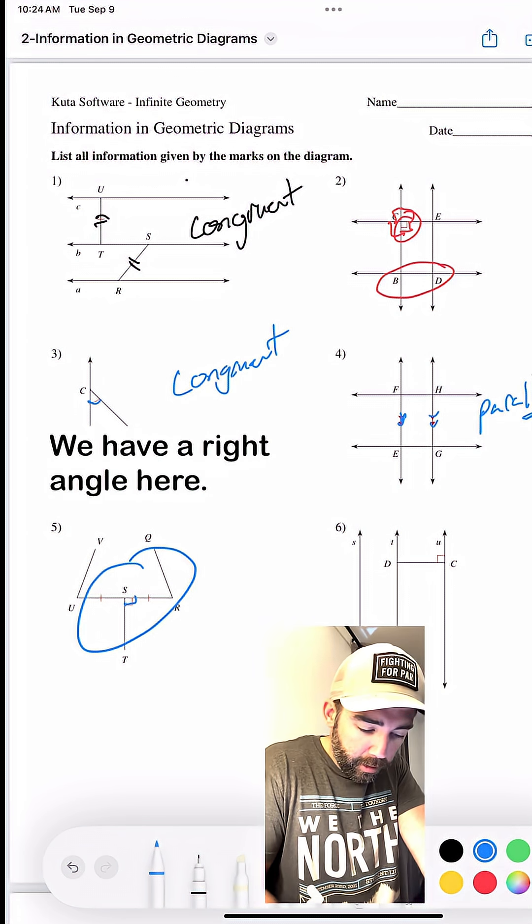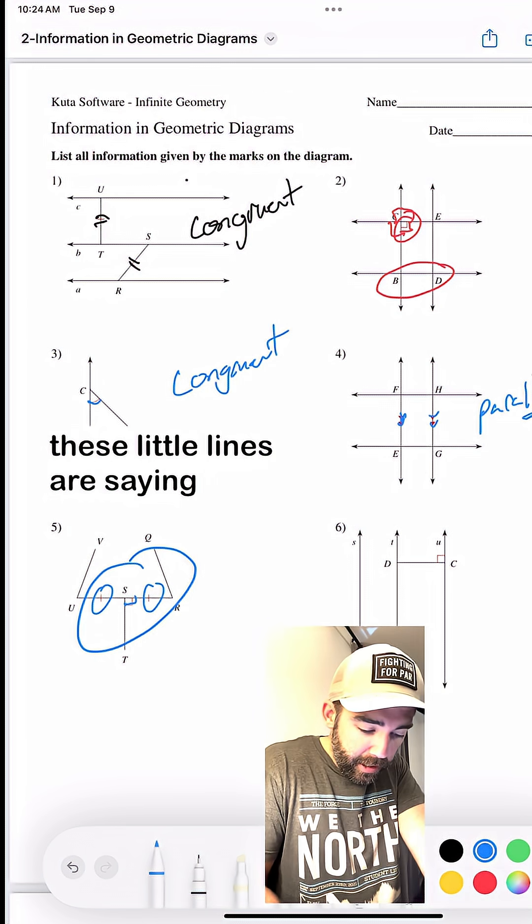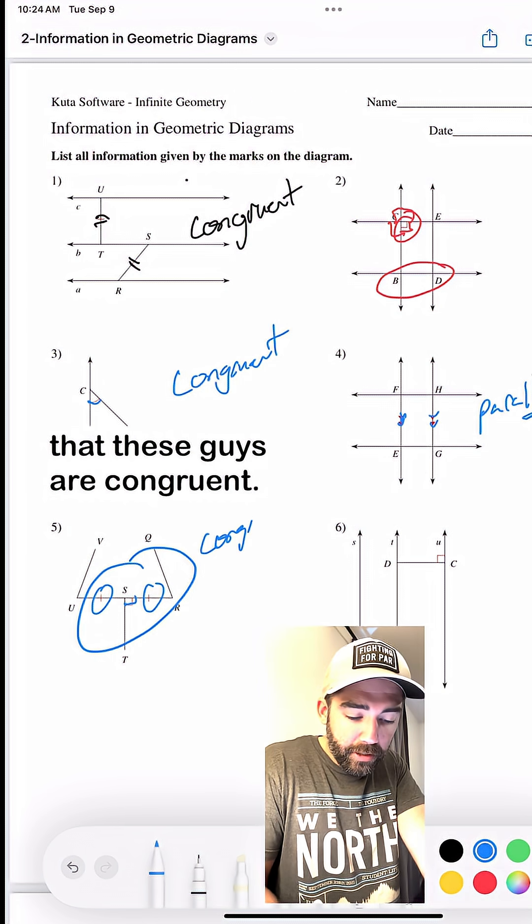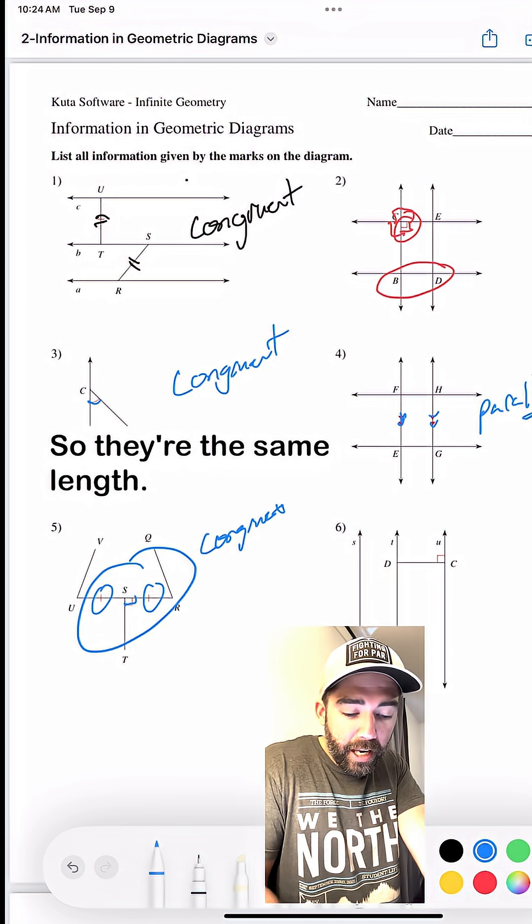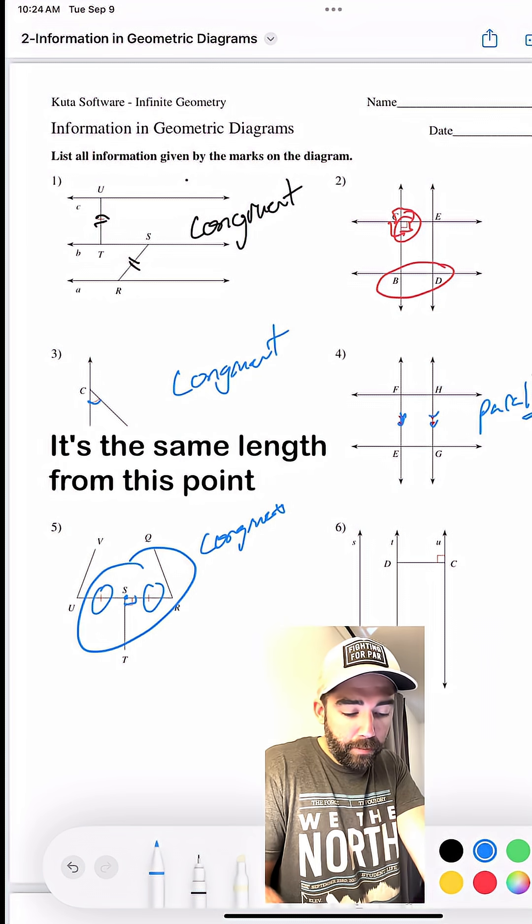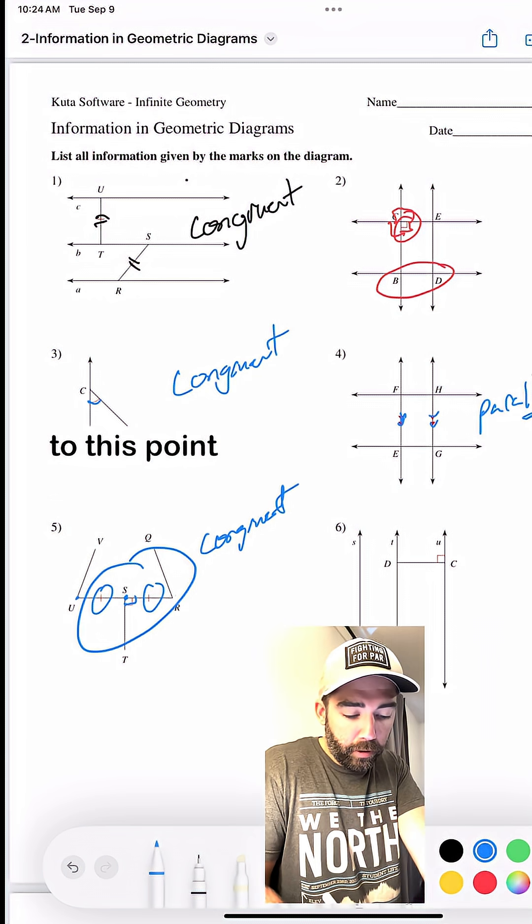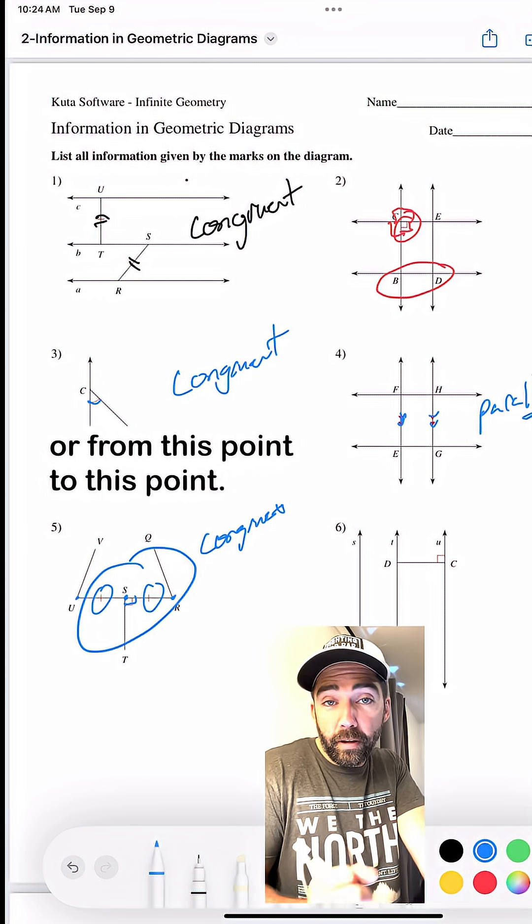All right, we have a right angle here. That's what that's saying. And then these little lines are saying that these guys are congruent. So they're the same length. It's the same length from this point to this point, or from this point to this point. Same one.